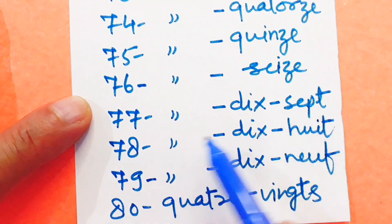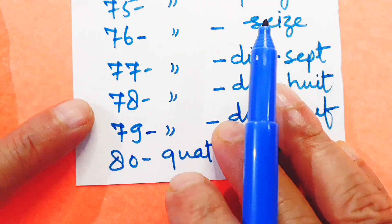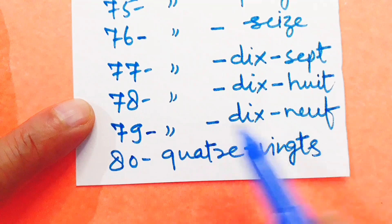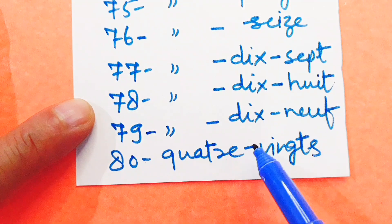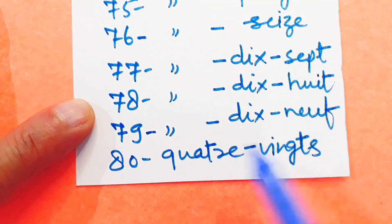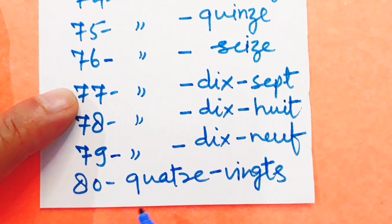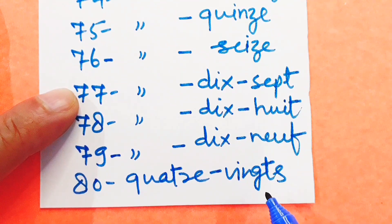78: Soixante-dix-huit. 79: Soixante-dix-neuf. 80: Quatre-vingts.